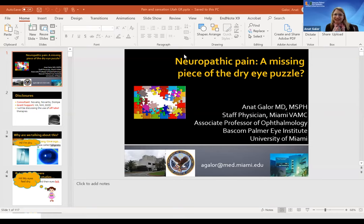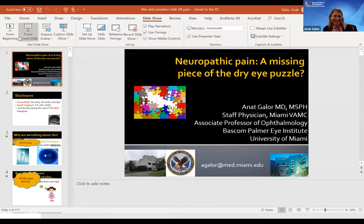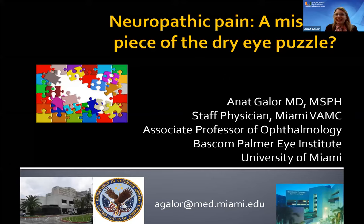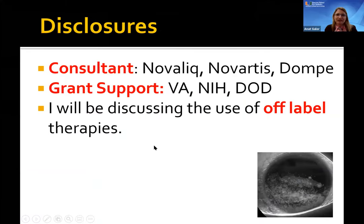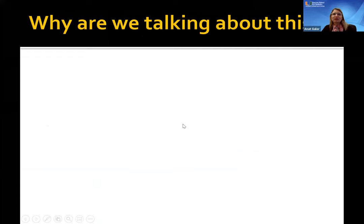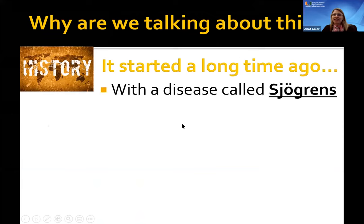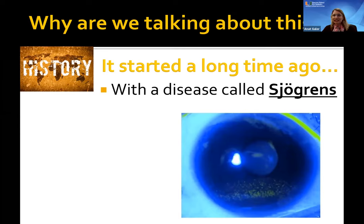Dr. Galore's disclosures: grant support from the VA, NIH, and DOD; consultant for several dry eye companies; will discuss off-label therapies. The grand rounds talk begins: A long time ago, dry eye was Sjögren's syndrome — patients with no tear lake, interpalpebral staining — eyes you look at and say definitively 'this is dry eye.' That classic presentation is where the story starts, but the topic has evolved considerably beyond it.